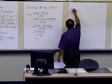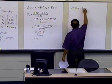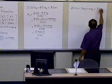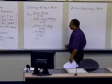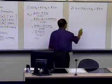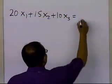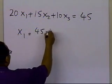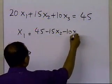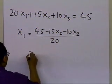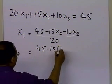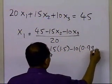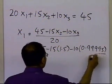So if you look at the first equation, we have 20 x1 plus 15 x2 plus 10 x3 is equal to 45. That's the first equation which we have. And we're going to calculate x1 from here. X1 is 45 minus 15 times x2 minus 10 times x3 divided by 20. So we're going to substitute the value of x2, which is 1.5, the value of x3, which we got as 0.9995, divided by 20.